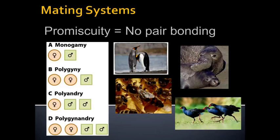Polyandry — 'andros' being the Greek root for male — is when there is one female and many males. Honeybees are a good example: for each hive there's a single queen bee who is the reproductive individual, and multiple male drones mate with her. The male drones die shortly after mating, but she has multiple mates, so her offspring have more genetic diversity.